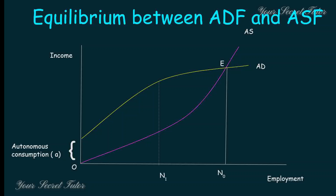At any level of employment before the equilibrium point, the Aggregate Demand Function is greater than the Aggregate Supply Function. This means consumers are ready to buy more products. Producers can earn extra profit, so they are motivated to employ more and produce more.